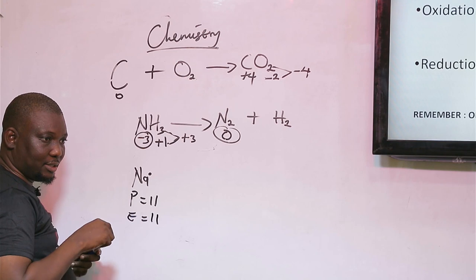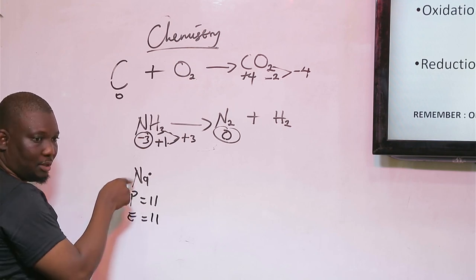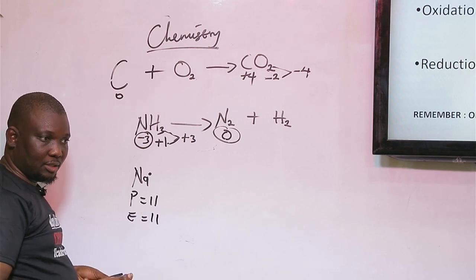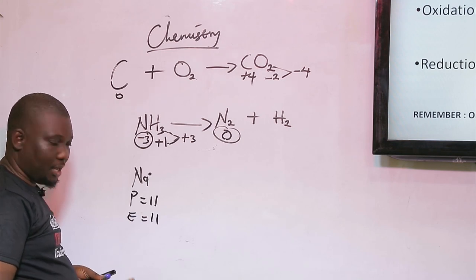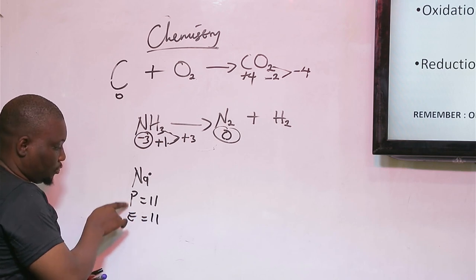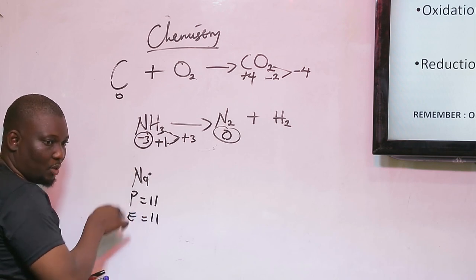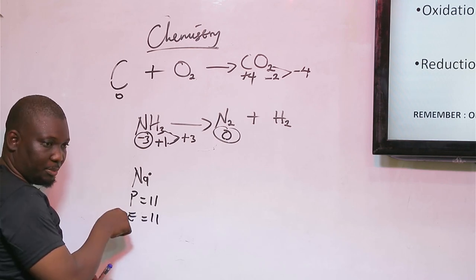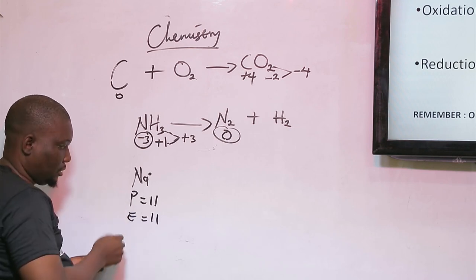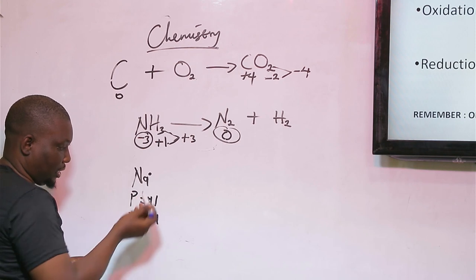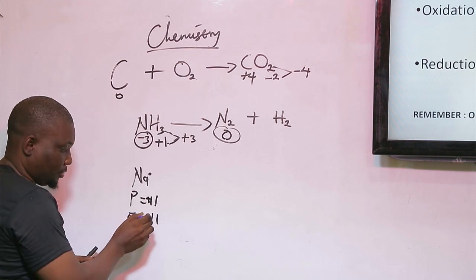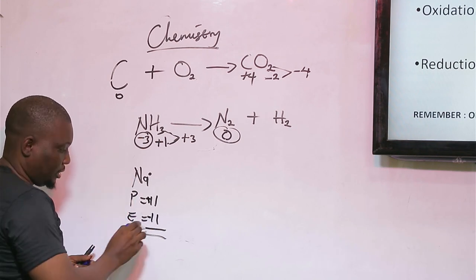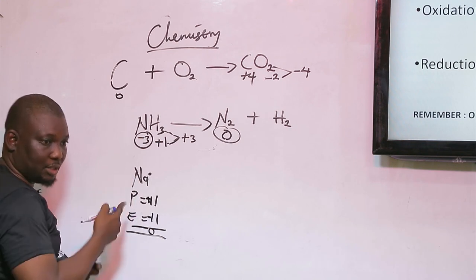The reason why the oxidation state of an element when it is free or uncombined is zero is because at this point, the protons are positively charged — that is plus 11 — and the electrons are minus 11. So the effective nuclear charge of sodium is zero. That is the reason why.